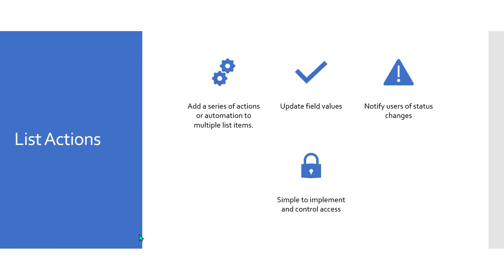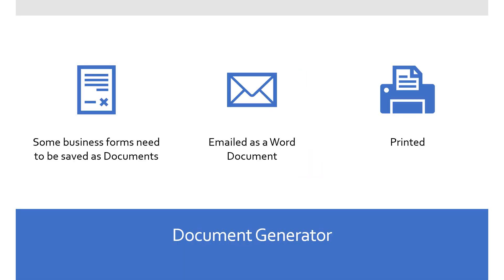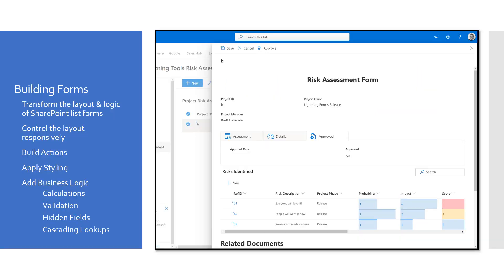With List Actions we're going to build an approval mechanism where we can select multiple projects with identified risks and approve all of them in one go, using actions like sending email, updating field values, and notifying of status changes. We can also control access to that list action so only approvers can see and click the approve button. The Document Generator will also form part of this solution — taking the completed risk assessment form from SharePoint, generating a document from it, which can then be emailed out or printed.